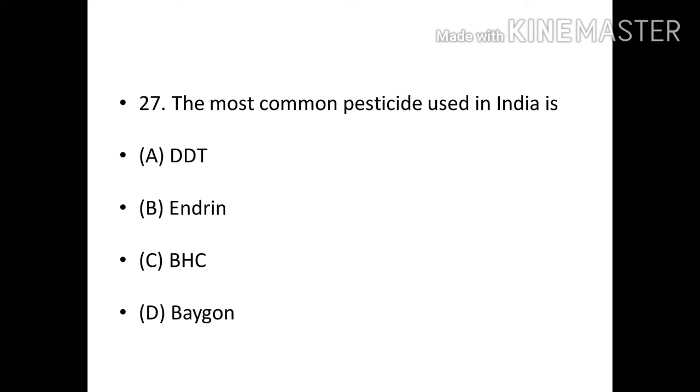The most common pesticide used in India is DDT, Endrin, BHC, or Bygone? Correct answer: Option C, BHC.